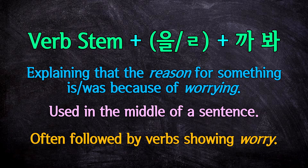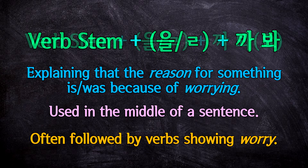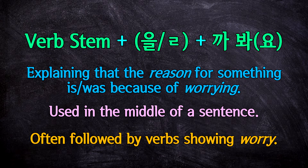You can also just use this form at the end of a sentence by itself. In this way, it basically means 'it's because I was worried about' whatever comes in front of it. Note that if you're going to use this at the end of a sentence, make sure to attach 요 to the end to be polite, so this can become 봐요, or something similar.